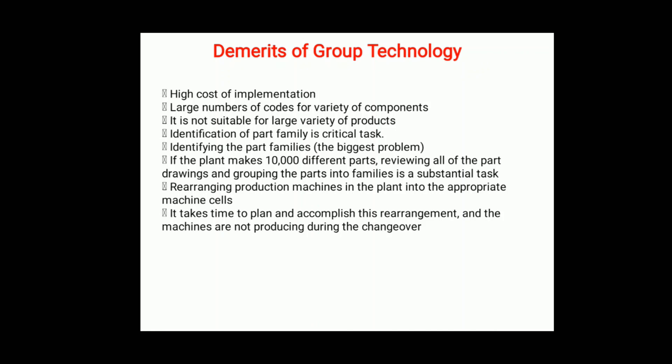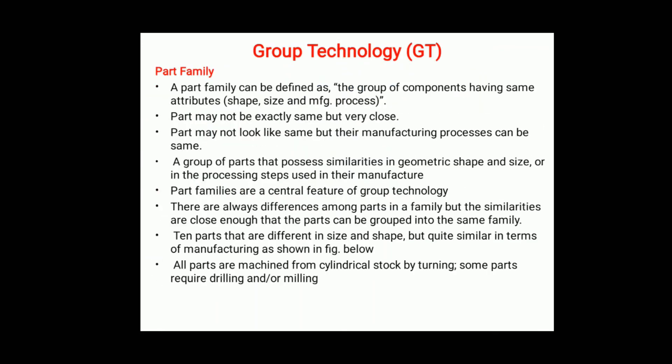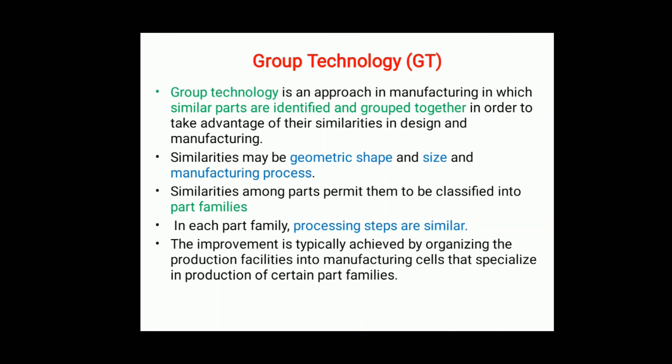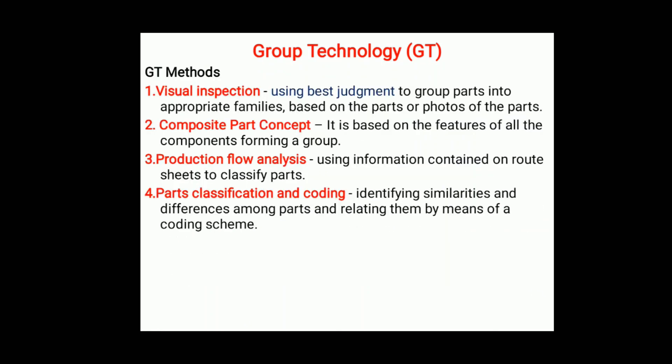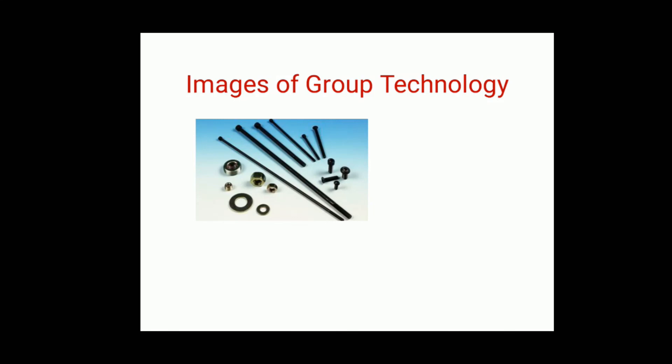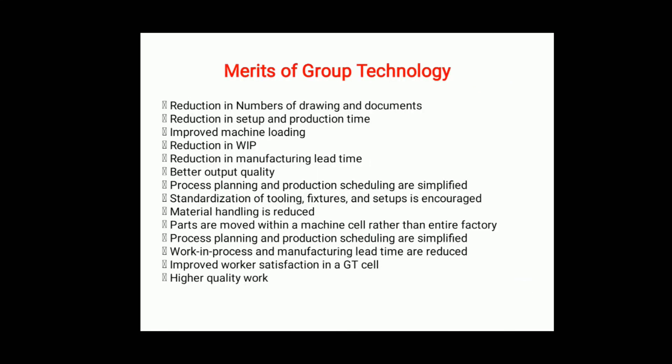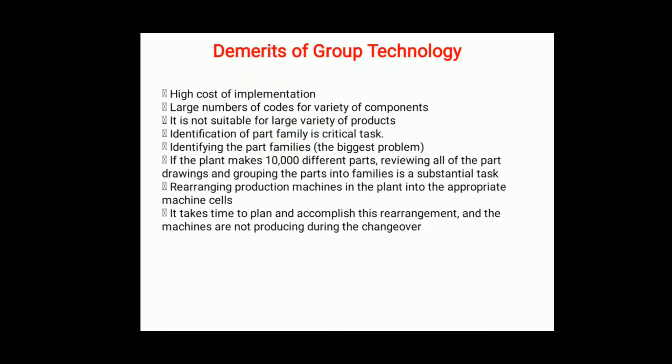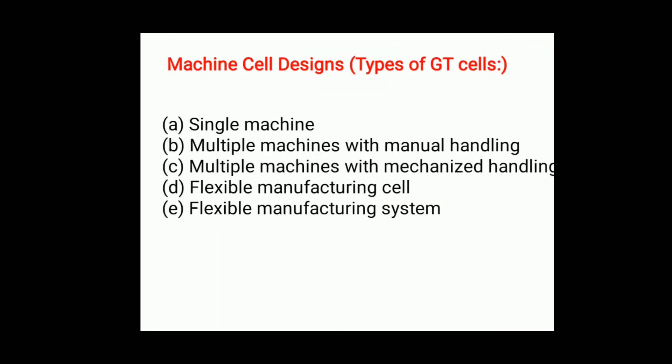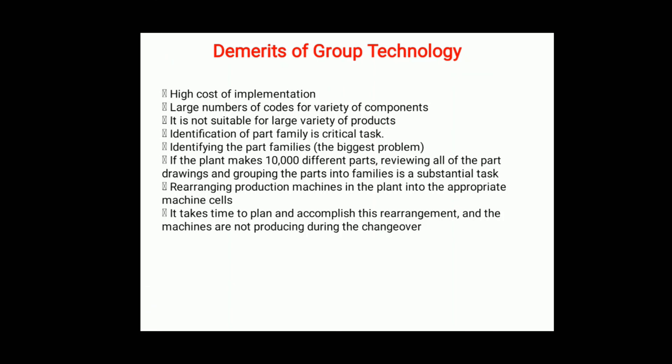In summary, today we covered group technology — its meaning, how we make different groups based on geometrical shape, size, and manufacturing processes, and how we proceed to part families using similar process steps. We also covered the group technology methods: visual inspection, composite part, production flow analysis, and codification/classification, along with an example. Finally, we discussed the advantages and disadvantages of group technology. In the next lecture we will cover the remaining parts.